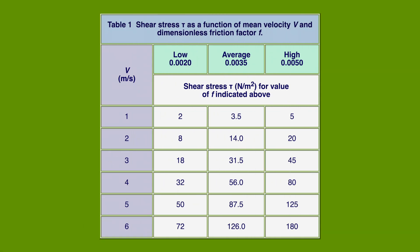Table one shows the values of shear stress τ as a function of mean velocity V for three values of friction factor: low, average, and high.